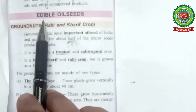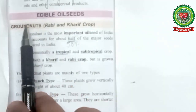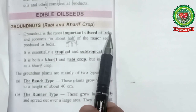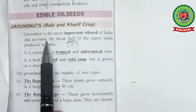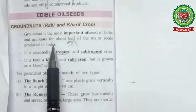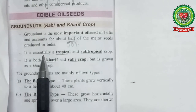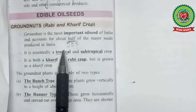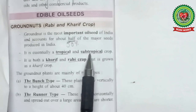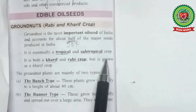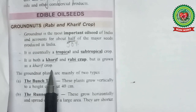Now let us start with the edible oilseeds. The first important edible oilseed is groundnut. Groundnut is the most important edible oilseed of India and the largest oilseed produced in India. It accounts for about 50% of the major oilseeds produced in India and 30% of total world production. It is essentially a tropical and subtropical crop. In India, it is grown both as a kharif and a rabi crop, but mainly as a kharif crop — that is, mainly in the summer season.